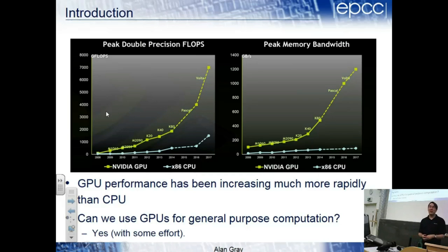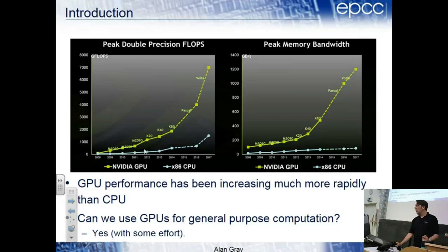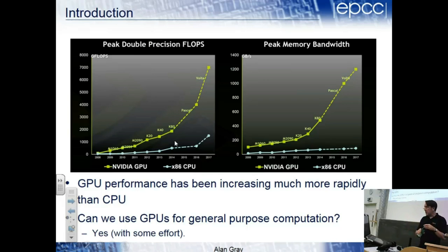GPUs didn't used to be good at double precision because for gaming you probably don't need it - if one pixel is off by one position it gets lost in the noise. But they added double precision relatively recently, and double precision performance has gone up significantly. A modern GPU has something like an order of magnitude more floating point performance than a modern CPU. Equally importantly, GPUs have to process a lot of data, so memory bandwidth has also been going up impressively.